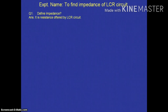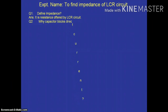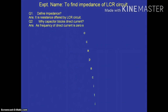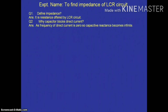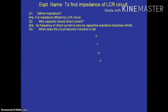The first question is: define impedance. It is the resistance offered by the LCR circuit. Second important question: why does a capacitor block direct current? Because for direct current, frequency is zero, so capacitive reactance becomes infinite.